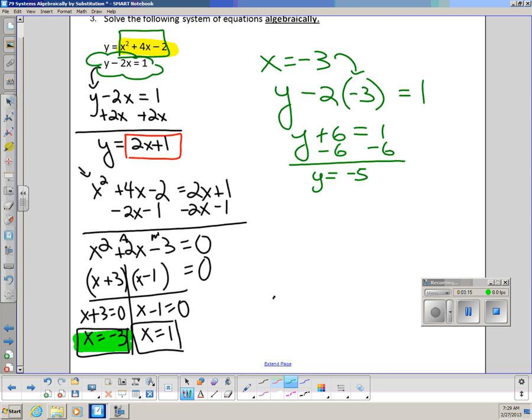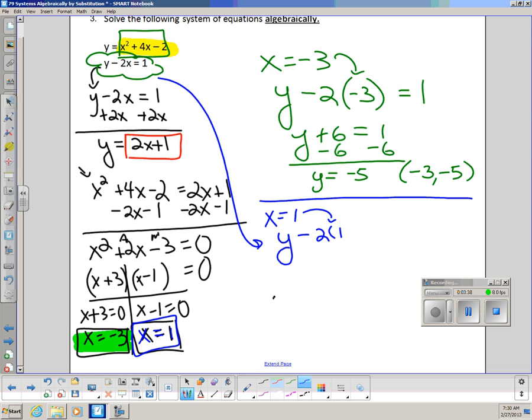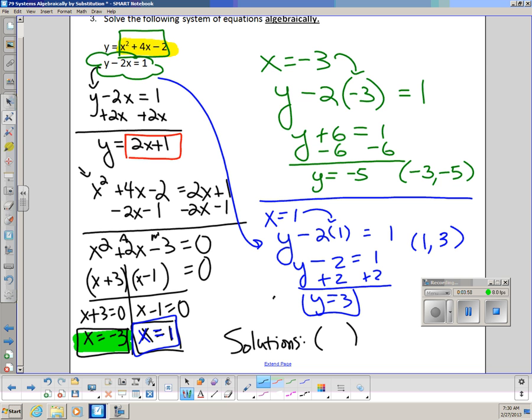I can subtract 6 from both sides, and I get y is negative 5. So one of the points, one of the solution points is the x value, negative 3, and the y value, negative 5. Here's the other value of x that we need to plug in, x equals 1. So I'm going to do that. I'm going to take that same equation and plug in 1 for x. So y minus 2 times 1 equals 1, y minus 2 times 1 is 2, add 2 to both sides, and y is 3. So now I get a solution point of 1 comma 3. And so all together, my final answer, the solutions are negative 3, negative 5, and 1, 3. And that's it.